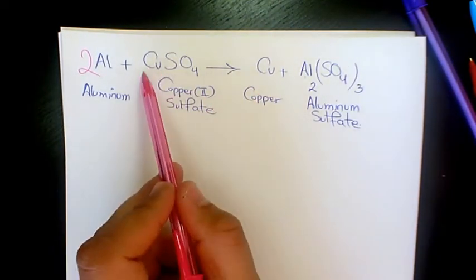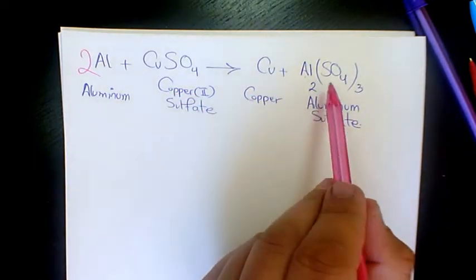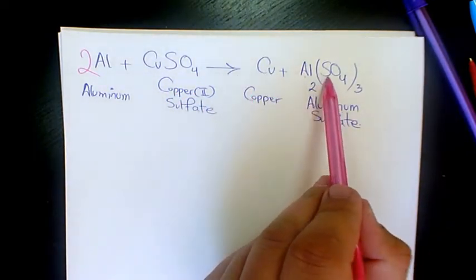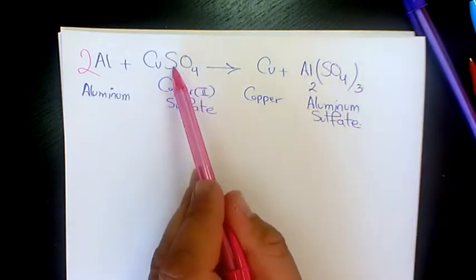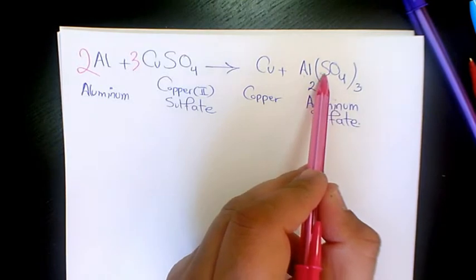Sulfur, we have three atoms in here and here we have one, so let's put 3 in here. So sulfur is balanced. Three in here, three in here. And oxygen, we have 12, 4 times 3 is 12, and here